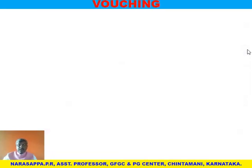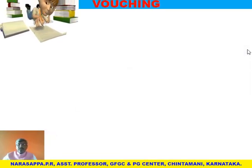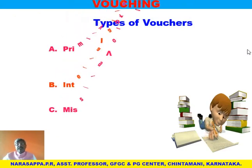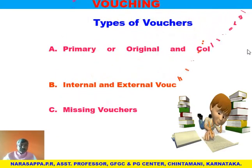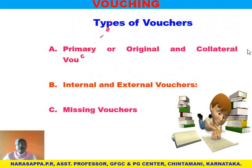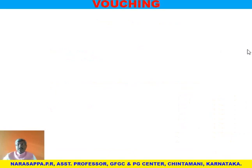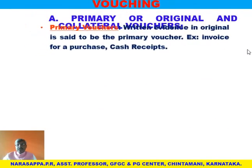What are the types of vouchers? We have three varieties: first, primary or original vouchers and collateral vouchers, which are also called supporting vouchers; second, internal and external vouchers; and third, missing vouchers.